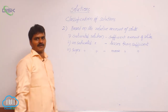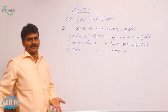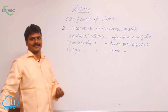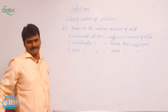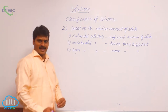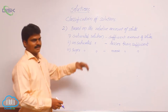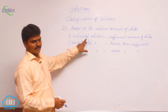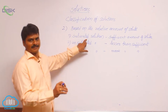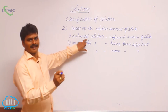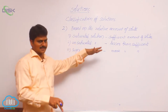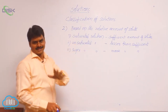For example, if you take 100 grams of water, it has the ability to dissolve 35 grams of NaCl. If 35 grams of NaCl is present in 100 grams of water, that is a saturated solution. If less than 35 grams — say 30 grams or 25 grams — is present in 100 grams of water, that is unsaturated.